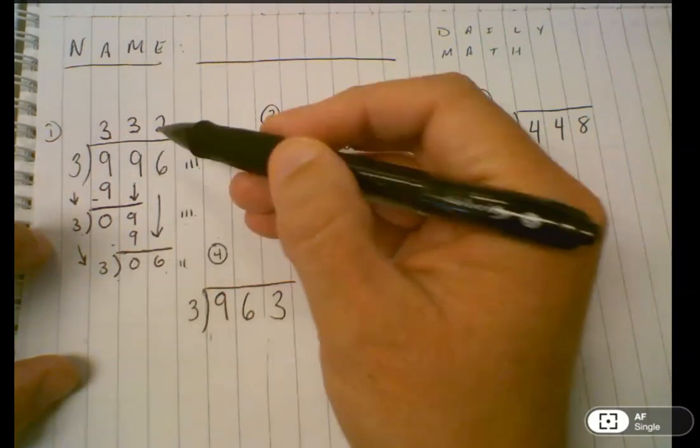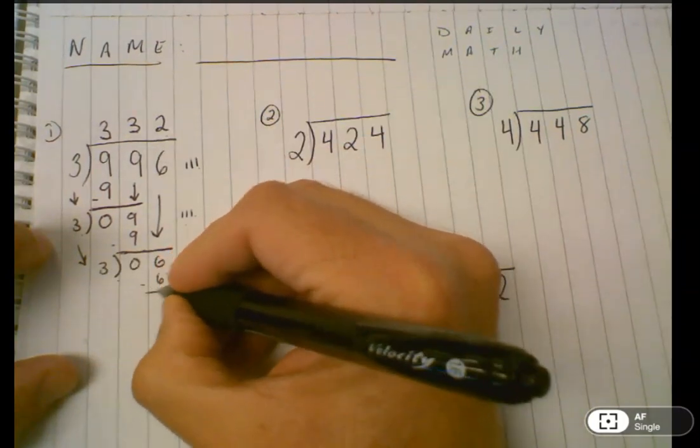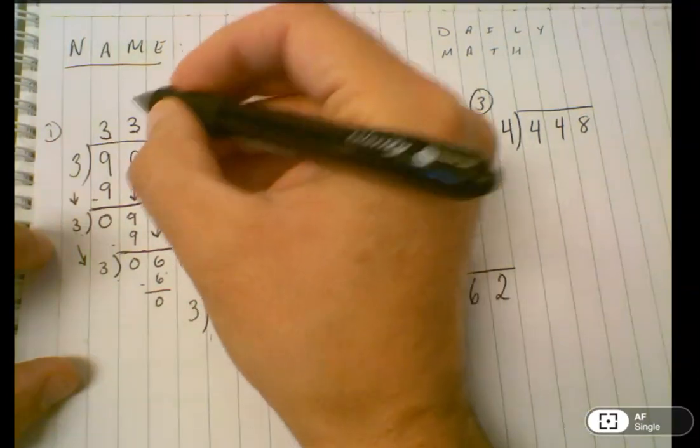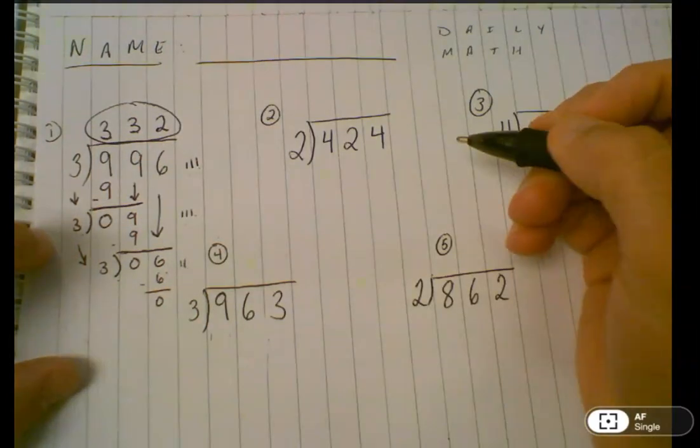I still need to finish it off by multiplying three times two and getting six, which gives me a remainder of zero. So 332 is the answer to the first question.